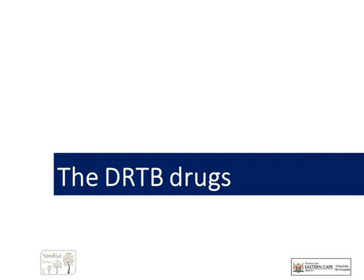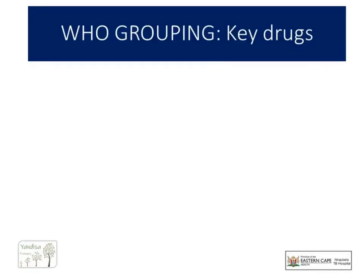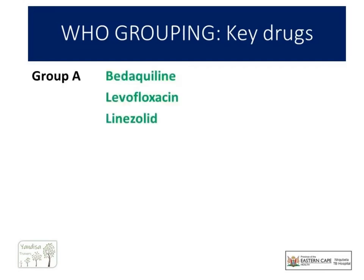Now let us look at the drugs available at this moment in time to treat drug-resistant TB. Our RR-TB drugs have been grouped by the WHO into three groups. Group A is the Mercedes-Benz of all our RR-TB drugs — absolutely essential and always part of the intensive phase where feasible. Bedaquiline, our newest TB drug, has revolutionized our RR-TB programs. It does have a small risk of increasing the QT interval and requires ECG monitoring. Levofloxacin, our fluoroquinolone of choice together with Bedaquiline, has been with us since the early MDR-TB days and is usually included throughout the regimen.